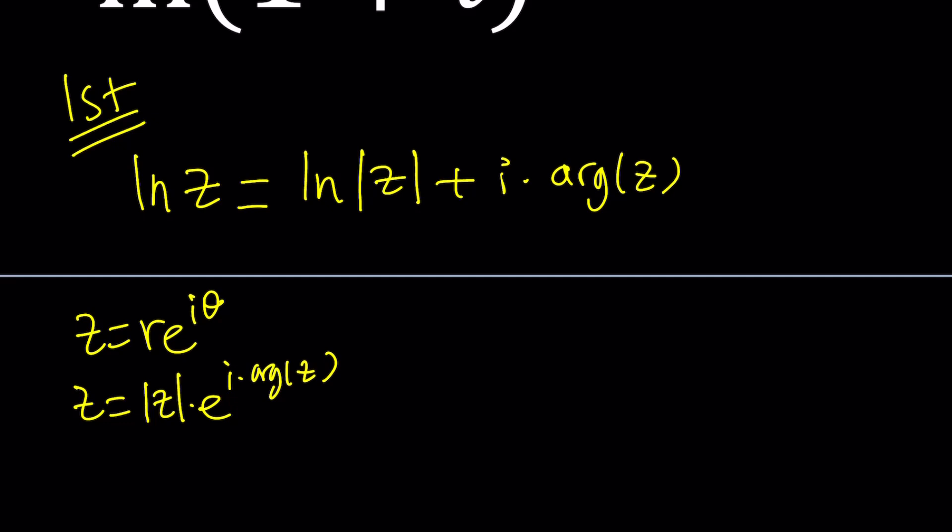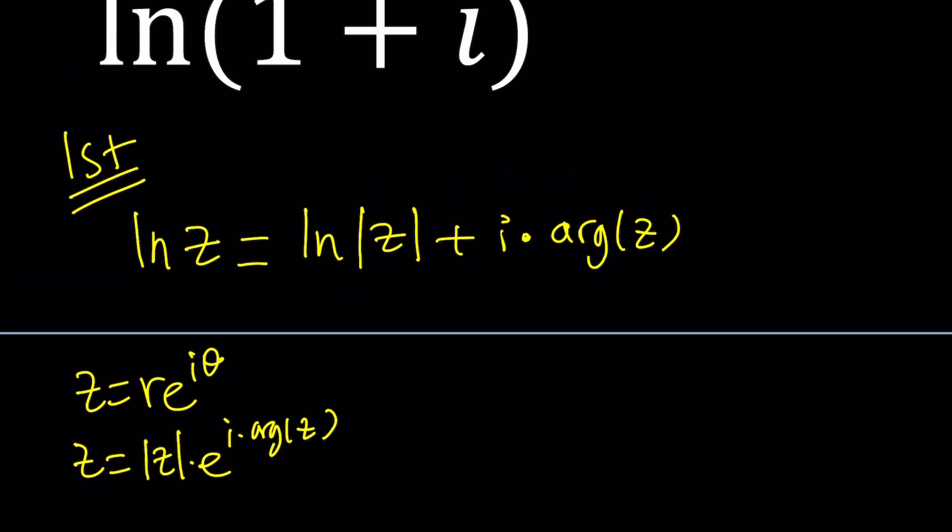Let's go ahead and see how we can apply it to our situation. Now, notice that we have the ln of 1 plus i in the denominator. Let's go ahead and replace z with 1 plus i. What's the absolute value of 1 plus i? If you use the Argand plane, it's going to be like 1, 1. If you look at the distance from 0, because this is 1, this is i, it's going to be root 2 from the Pythagorean theorem.